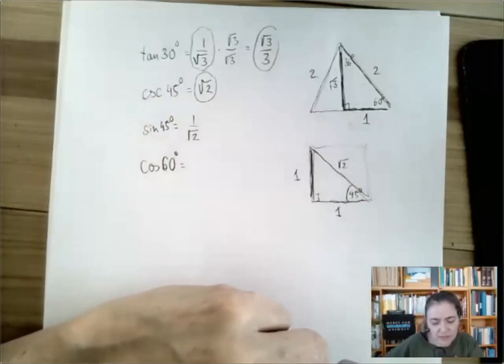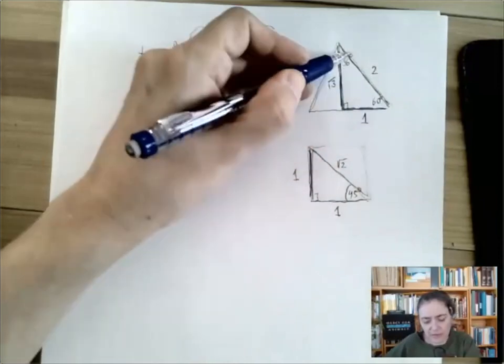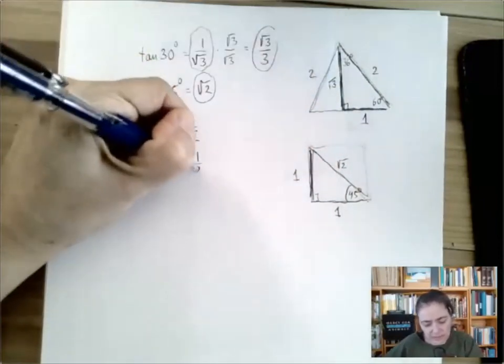But now we focus on 60 degrees. Cosine is adjacent over hypotenuse. To 60, the adjacent side is 1, the hypotenuse is 2. So cosine 60 is 1 half.